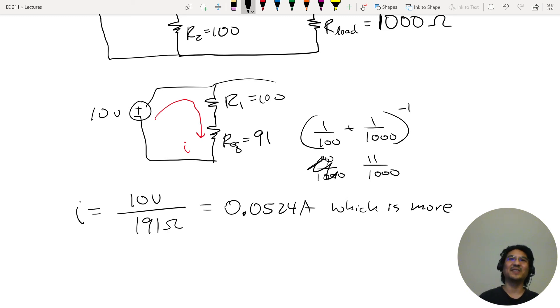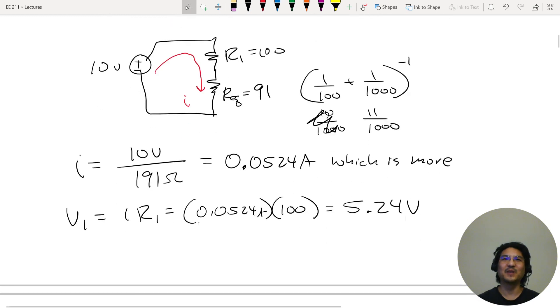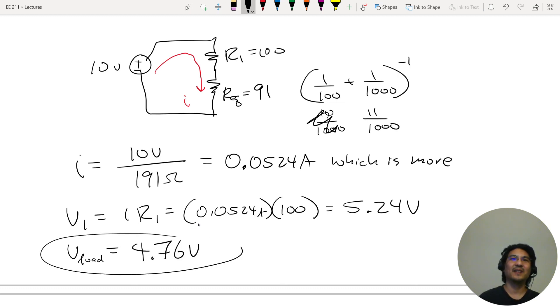So now how much voltage is here and how much voltage is here? So V1 is IR times hundred equals, and then just move the decimal, so five point two four. And then how much across the other one? Let's just say across the load is the leftover, ten minus five point two four, so four point seven six volts. We were expecting five but just by connecting the load it screwed everything up. It pulled more current through the circuit and we're only getting four point seven six volts, not five volts.